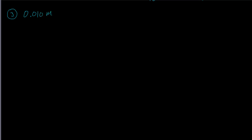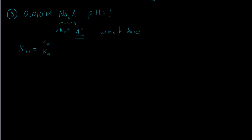One more example: a 0.01 molar solution of Na2A, the disodium salt of this acid. This gives 2 moles of Na+ and 1 mole of A2- in solution. Sodium doesn't affect the pH, but A2- is a weak conjugate base, so we solve it like a weak base problem. KB1 equals Kw divided by Ka2, which equals the OH- concentration times HA- concentration divided by A2-.